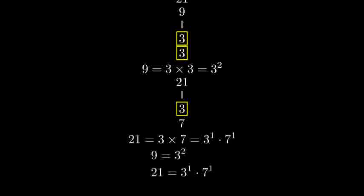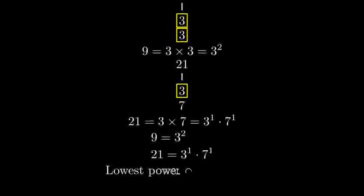To find the greatest common factor, we take the common prime factors with the lowest power. 3 appears in both numbers, and its lowest power is 1 in 21.